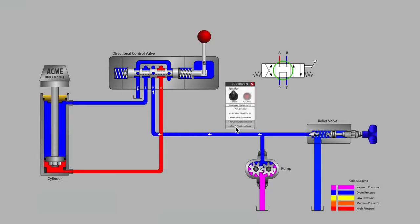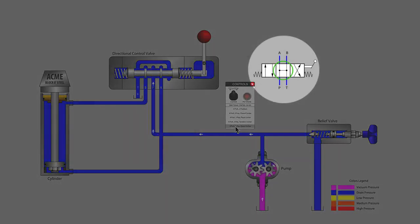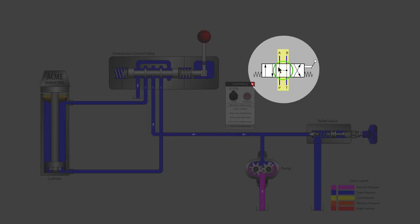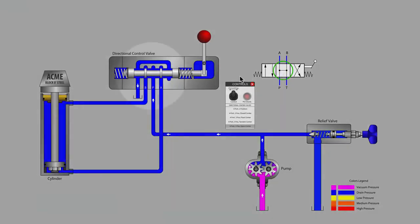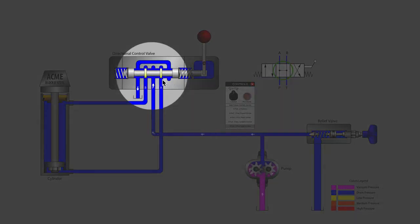Now let's switch to the open center valve. Notice in the symbol that all ports are shown connected together when the valve is in neutral. Moving to the cutaway, we see that the lands on the spool have been machined back so far that they do not cover any ports while in the center or neutral position.